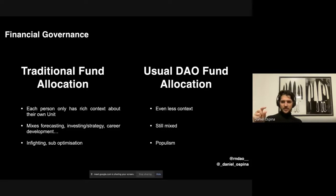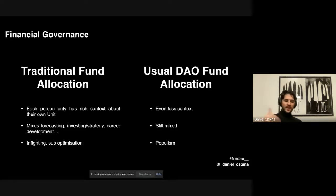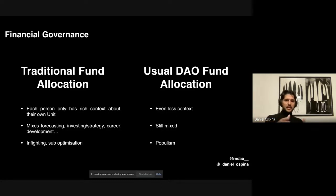Even with $1,000 in tokens, a 10% impact decision — which is actually a huge decision — only produces a $100 budget. That maybe pays for two or three hours of your time. It doesn't really afford you enough time before you're investing more than what the decision is worth for you. So you're then purely relying on emotional incentives and community feeling to justify participation, which is quite hard. By the nature of that, a lot of the people deciding are investing very little time investigating each decision, while still mixing strategy with forecasting and career considerations.